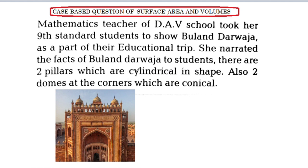There are two pillars which are cylindrical in shape. Also, there are two domes at the corners which are conical in shape.